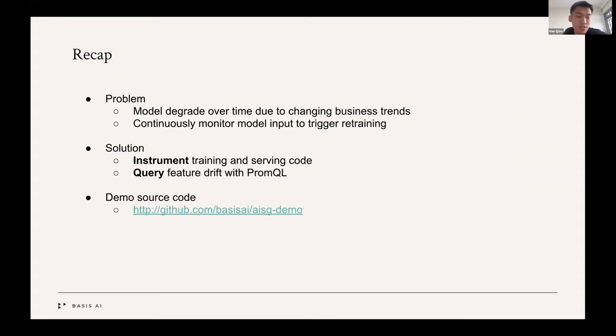So a recap of what we have covered so far. First of all, we understood the problem of model decay. We understood why it degrades over time because due to changing business trends. And we also managed to continuously monitor the model input and use that as an indicator to re-trigger your training jobs. And we talked about the solutions that we have come up with, including how to instrument serving and training code and how you construct queries to evaluate this feature drift. So all the demo source code are available in this URL hosted on GitHub.